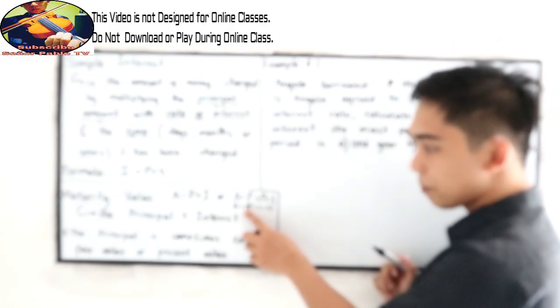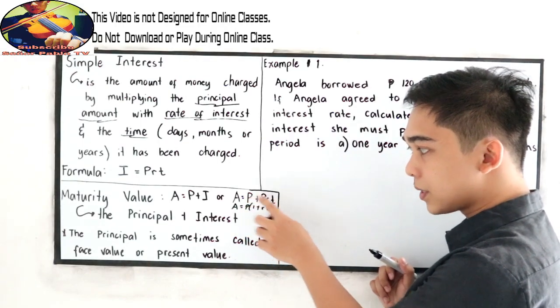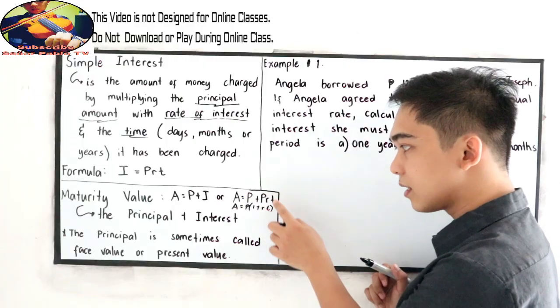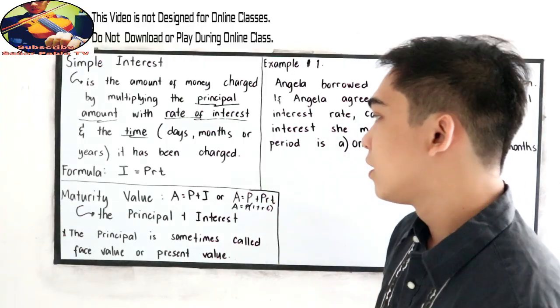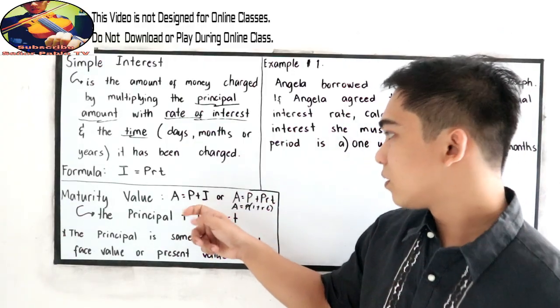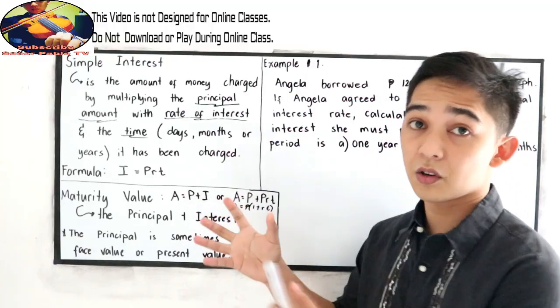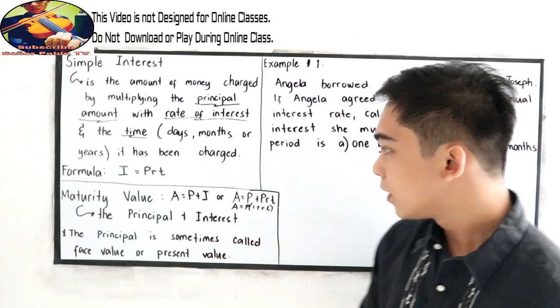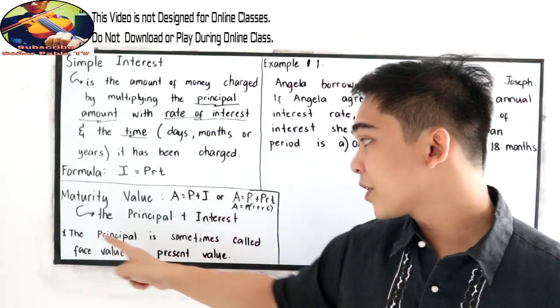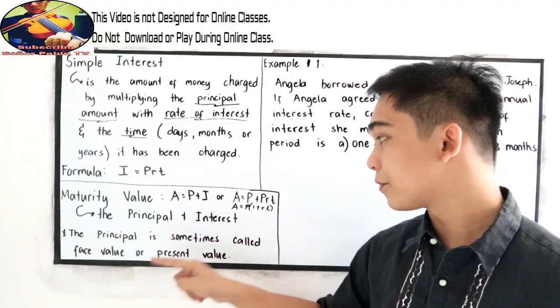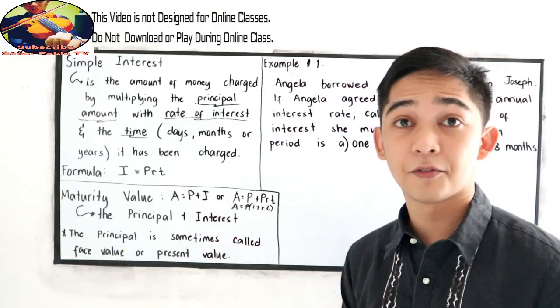So if we're going to check, P times 1, that is P, copy the plus sign, P times R, T, that is P, R, T. So this is our formulas for maturity value. So they are all the same. Note, the principal is sometimes called the face value or the present value.